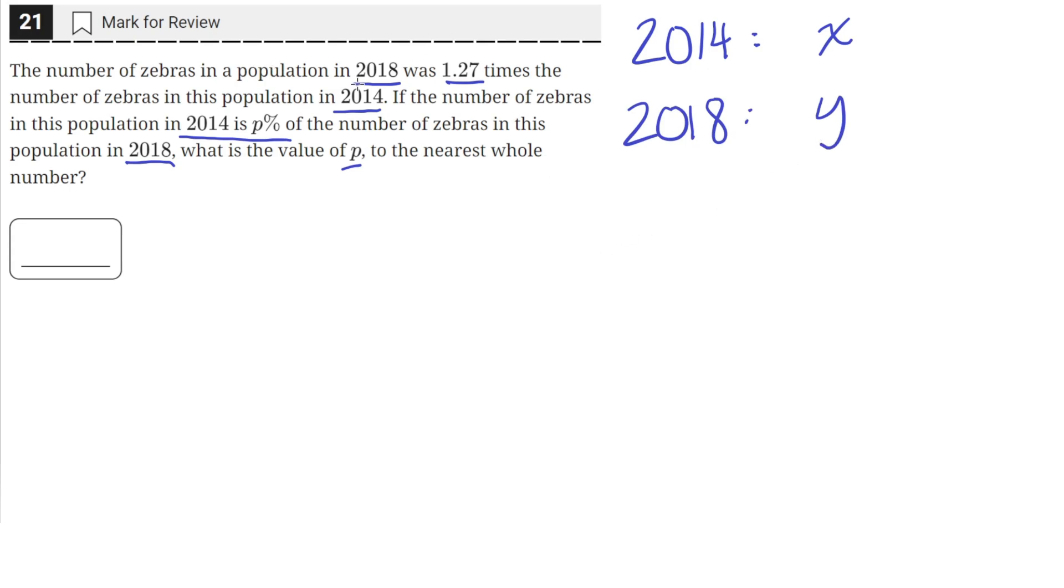So we're given that the population in 2018, which is y, is 1.27 times the population in 2014. So that means y, the population in 2018, is 1.27 times the population in 2014, which is x.